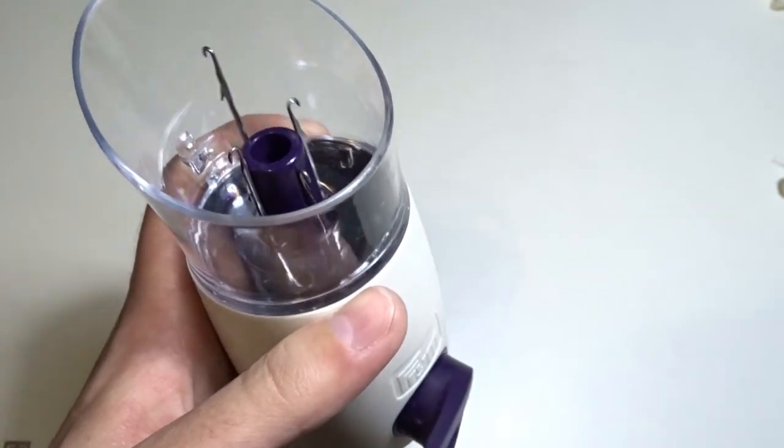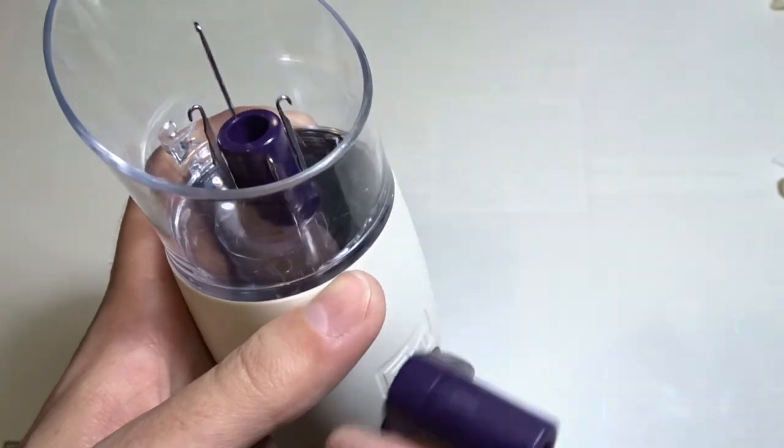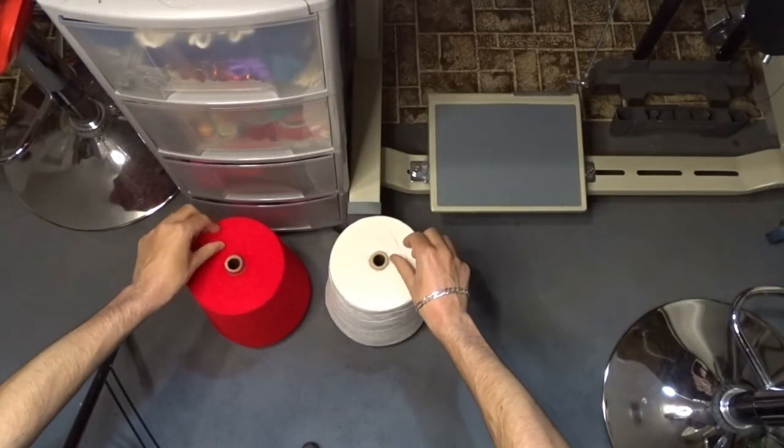Now it is working again. Let's make one bracelet. I will use these bobbins with acrylic yarn.